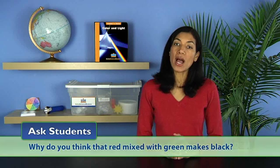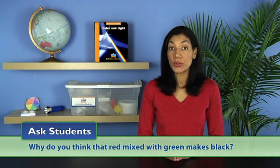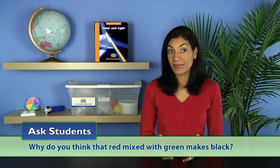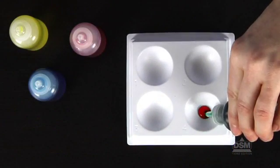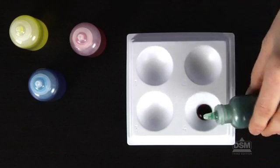Then ask, why do you think that red mixed with green makes black? Students will see that when all colors of light are absorbed by pigments and none is reflected, the resulting color looks black.